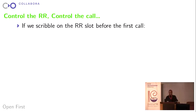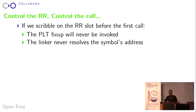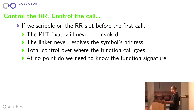The first thing we've established, which is great from the point of view of someone writing an isolating shim, is that we neither know nor care what the signature of the function looks like. If we can control the relocation record, we can control where the call ends up. If we scribble on the relocation record before the first call, the PLT fixup code will never be invoked. The linker will never resolve the symbol's address. We have total control over where the function call ends up, and at no point do we need to know the function's signature.